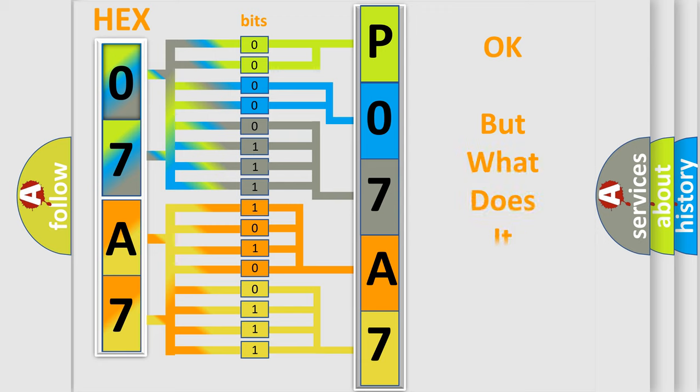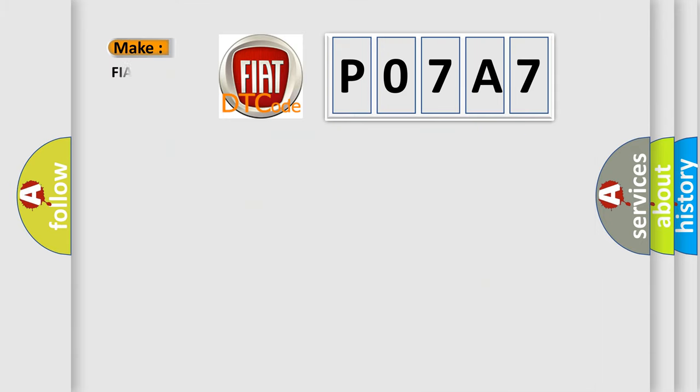The number itself does not make sense to us if we cannot assign information about what it actually expresses. So, what does the diagnostic trouble code P07A7 interpret specifically for FIAT car manufacturers?